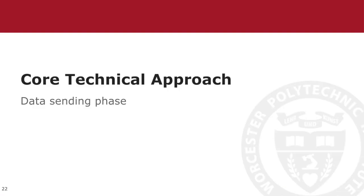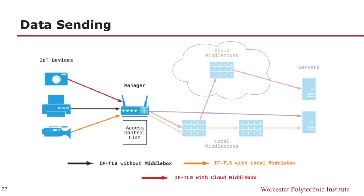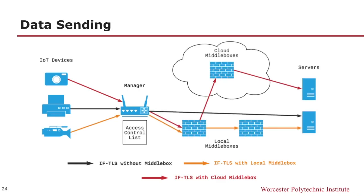I will now discuss the next phase of IFTLS: the data sending phase. This diagram shows a network of three devices and three different access rules. The manager looks at the access rules and redirects traffic accordingly. Remember that during initialization, the manager shared keys with the middleboxes also in accordance to these rules, so the middleboxes that are already on these routes already have the read keys. If access rules change, the IFTLS session will have to be re-established. In this example, there are three different routes: IFTLS with no middlebox, IFTLS with a local middlebox, and IFTLS with a local and cloud-based middlebox.